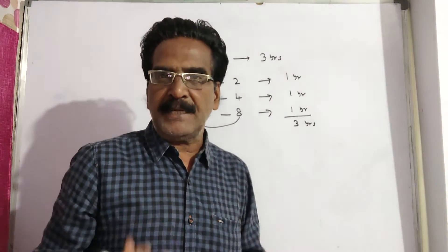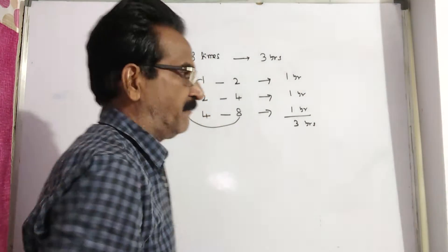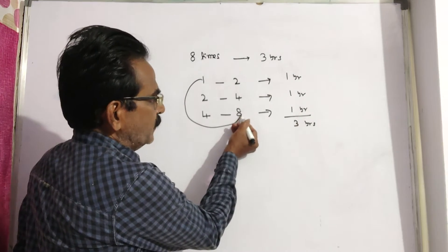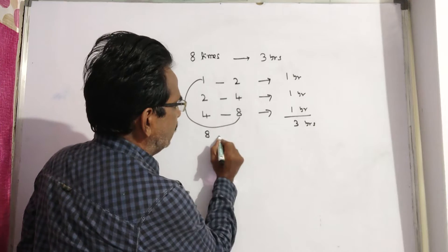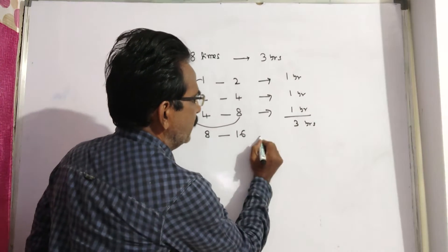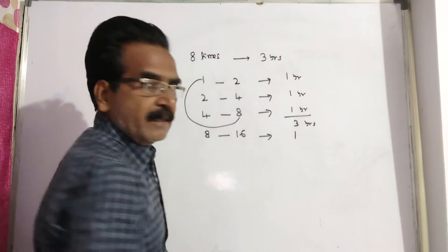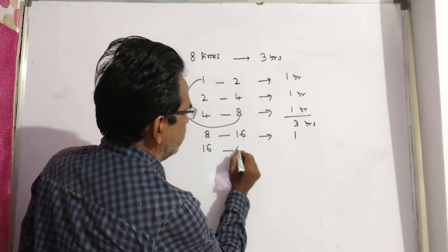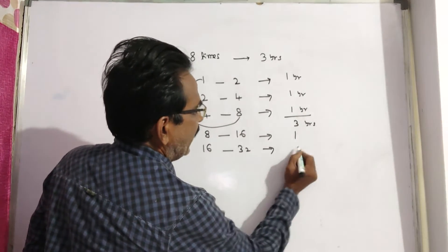Now, the question is in how many years it becomes 32 times itself. See friends, because again this 8 becomes 16 in 1 more year, and this 16 becomes 32 in another 1 year.